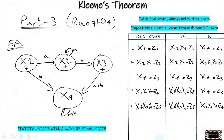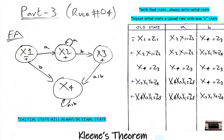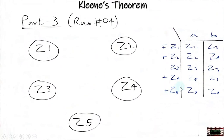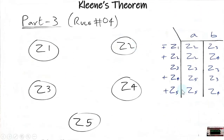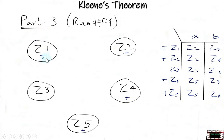Moving on to the next slide, we will draw the finite automata of the Kleene closure using this transition table. I have drawn a short version of the transition table keeping only the z states, and by looking at this short transition table we can draw the finite automata. We identify z1 as the initial and final state, and z2, z4, z5 as the final states.